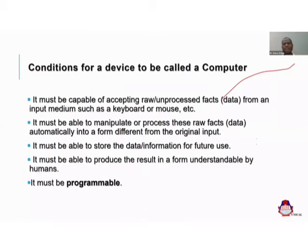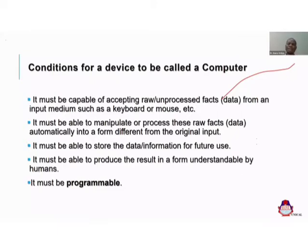Now we consider what conditions a device must fulfill to be called a computer system. First, it must be capable of accepting raw facts. Unprocessed facts are called data. That device must be capable of accepting raw facts from an input device. Input devices include things like the keyboard, the mouse, the light pen, and the scanner. For any device to be called a computer system, that device should be able to accept unprocessed facts through any of these input media.